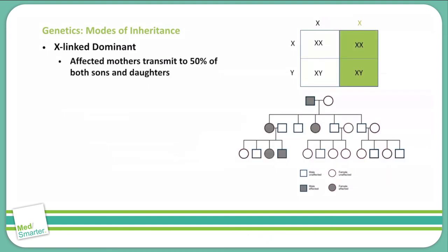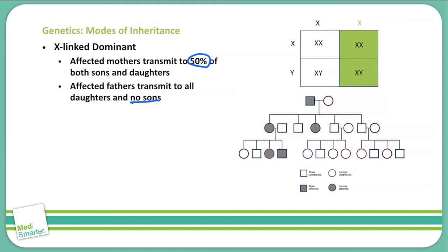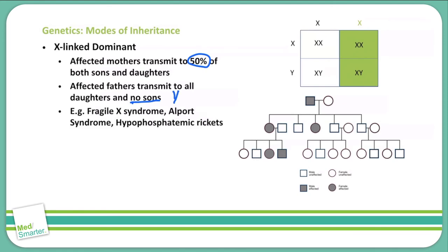Moving on to X-linked dominant. This is seen in every person that carries the trait, as it is a dominant trait. Affected mothers will transmit this to 50% of their sons and daughters. It is not expressed in sons more than daughters because it is dominant. Affected fathers will transmit it to all of his daughters but will not transmit it to his sons, because he only passes the Y chromosome to sons. Examples include fragile X syndrome, Alport syndrome, and hypophosphatemic rickets — specifically, hypophosphatemic rickets involves loss of phosphate at the proximal tubule.